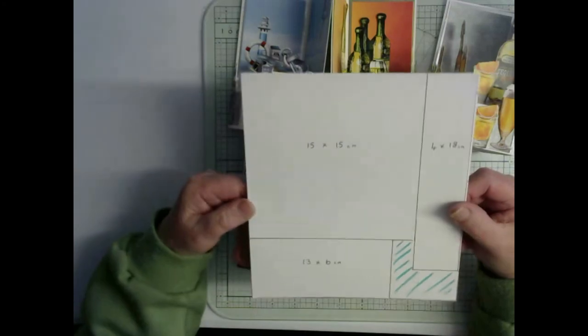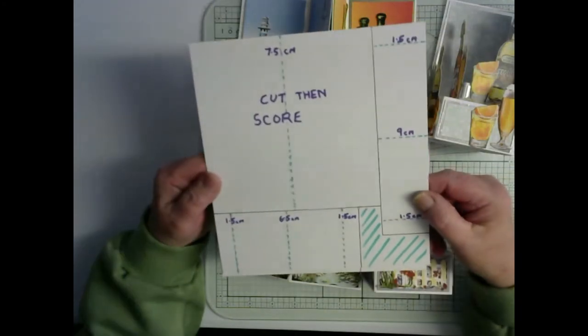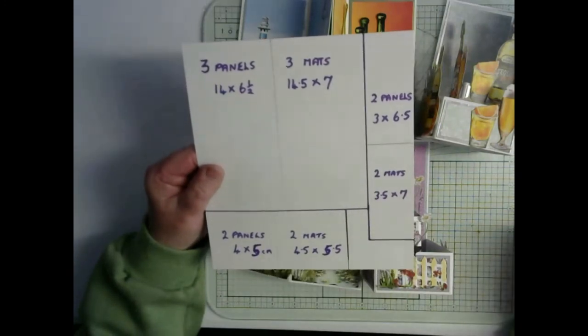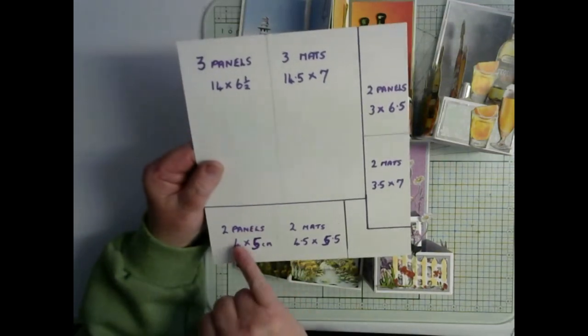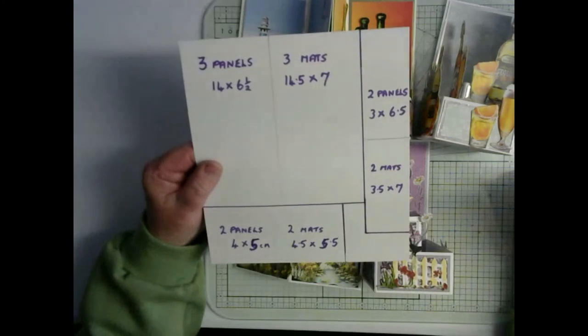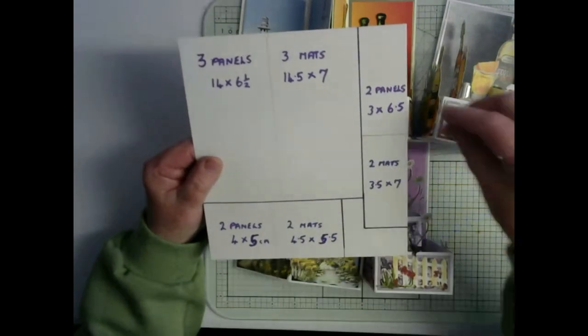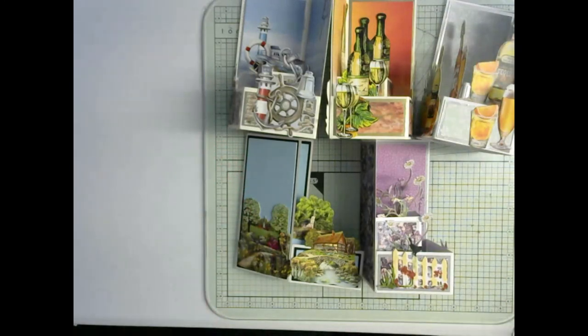Know your measurements. Know your score lines. And then finally prepare all of your panels before you start working on your card. You can place them as you cut them into your diagram and then make them up and you'll know exactly which ones to pick up at the right time. So have fun. I hope you have a go. Show me what you managed to achieve. And enjoy. God bless.